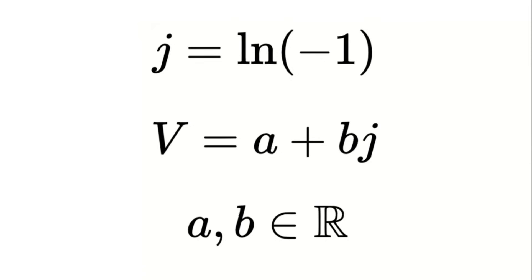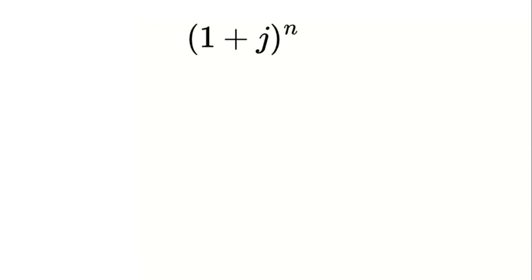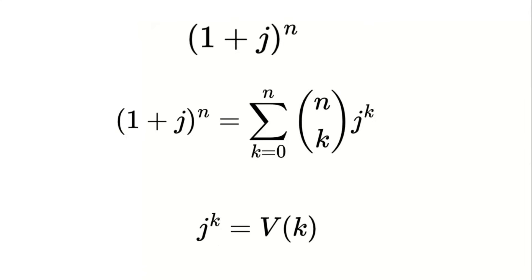Now let's focus on the expression 1 plus j raised to the power of n. To expand this we'll use the binomial theorem which tells us the sum from k equals 0 to n of the binomial coefficient n choose k multiplied by j raised to the power of k. But here's the twist. In the virtual number system the powers of j are represented as V of k. This means instead of just writing j to the power of k we use V of k instead.